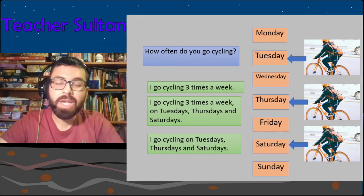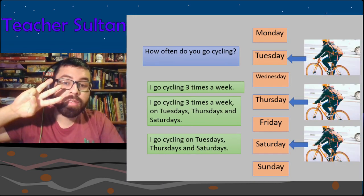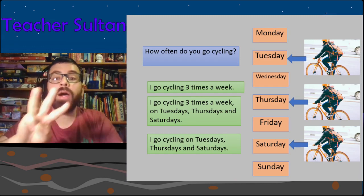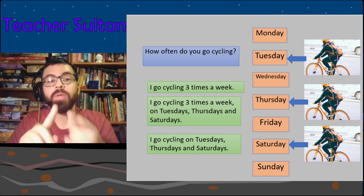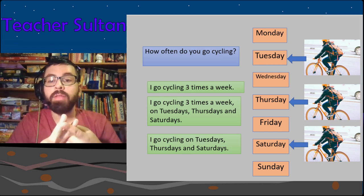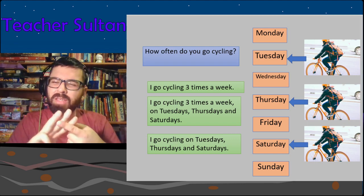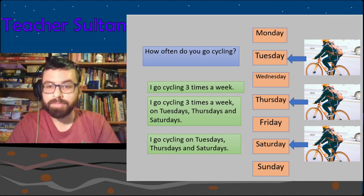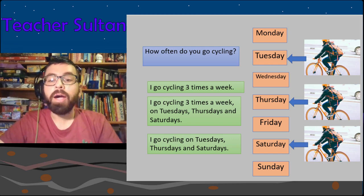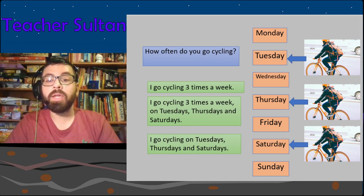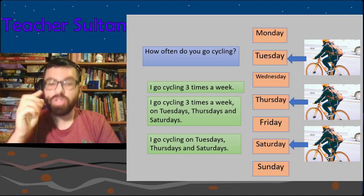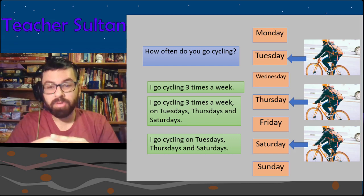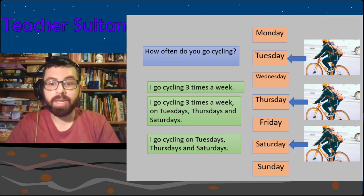How often do you go cycling? 'I go cycling three times a week.' We say once, twice, but we don't really say 'thrice' — just say 'three times a week.' You can also add the days: 'I go cycling on Tuesdays, Thursdays and Saturdays.'